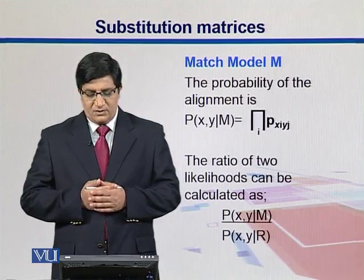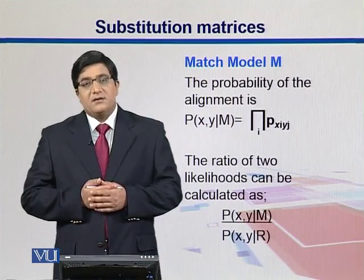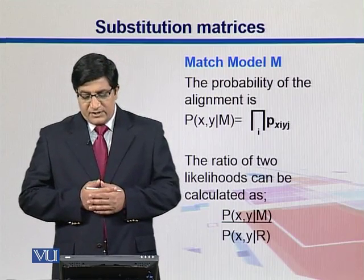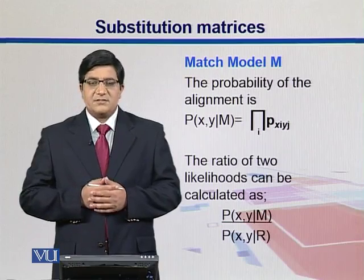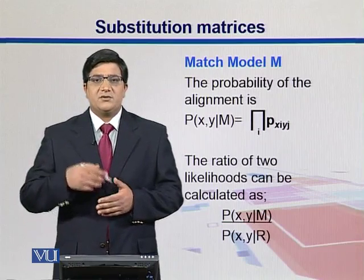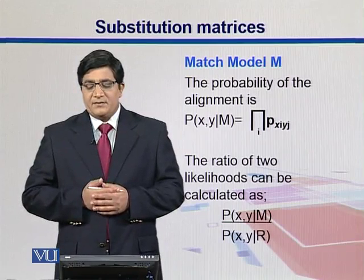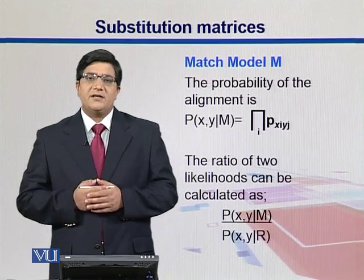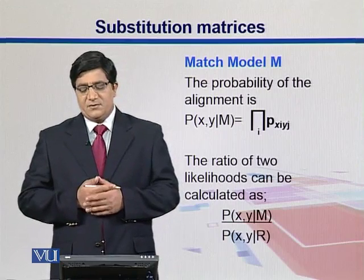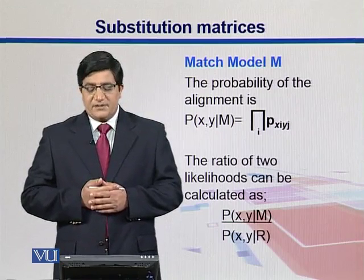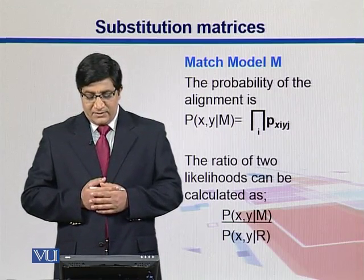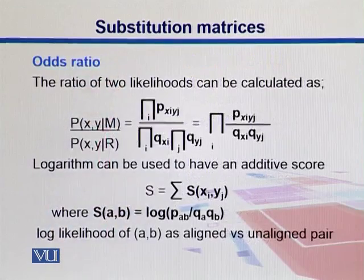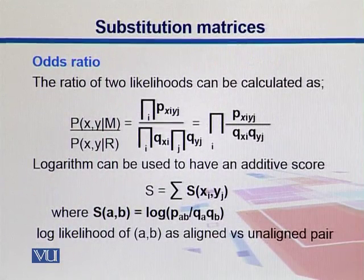So we have P(x, y | match model). The pi sign here is the product sign — it is the product over all values of i of the joint probability of xi and yj. We can take these two models and correlate them with one another to come up with the likelihood ratio: P(x, y | match) divided by P(x, y | random). Putting those values together gives us our answer.